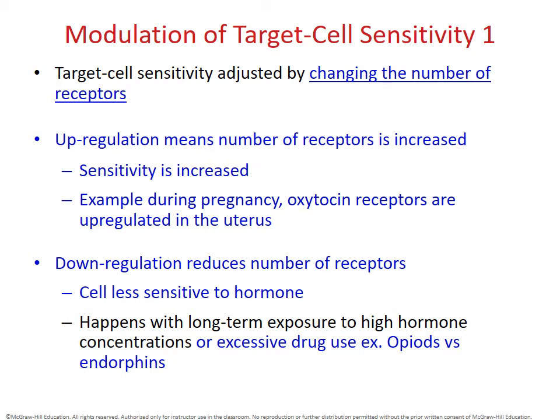We can also regulate how sensitive our body is to hormones by changing the number of receptors on target cells — this is called up regulation and down regulation. We are not changing the number of target cells; we're changing the number of receptors on those cells. If you up regulate, you increase the number of receptors and get a more amplified hormonal response. If you down regulate, you reduce the number of receptors so the cell becomes less sensitive and you get a more muted response.